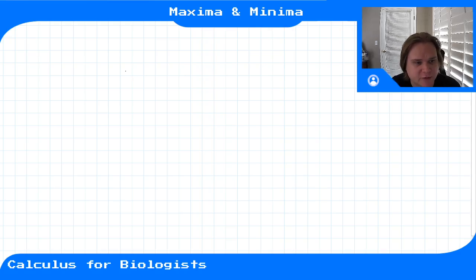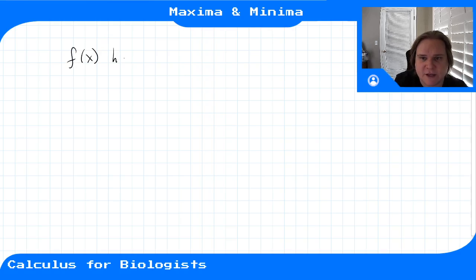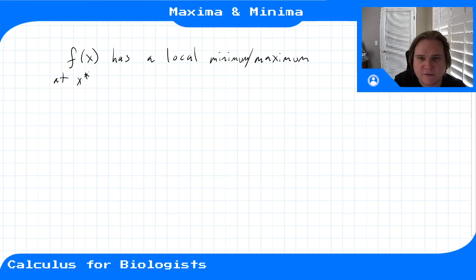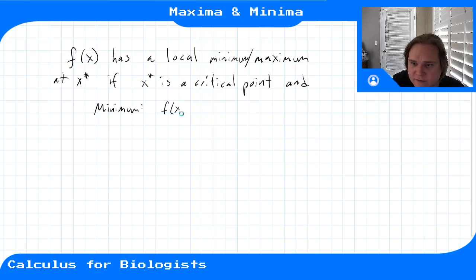Now that we've gone over what the second derivative can be used for in graphing a function, we can also use it to understand maximas and minimas. In the previous video I said this is a local maximum, this is a local minimum — we'll go into it more here. We basically say that a function f(x) has a local minima or maxima at x* if x* is a critical point, and for a minimum, f switches from decreasing to increasing.